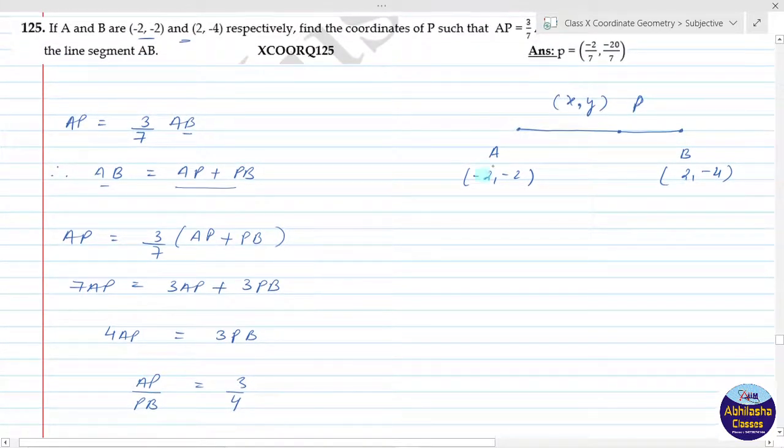So AP upon PB comes out to be 3:4. This means that point P divides AB in the ratio 3:4.